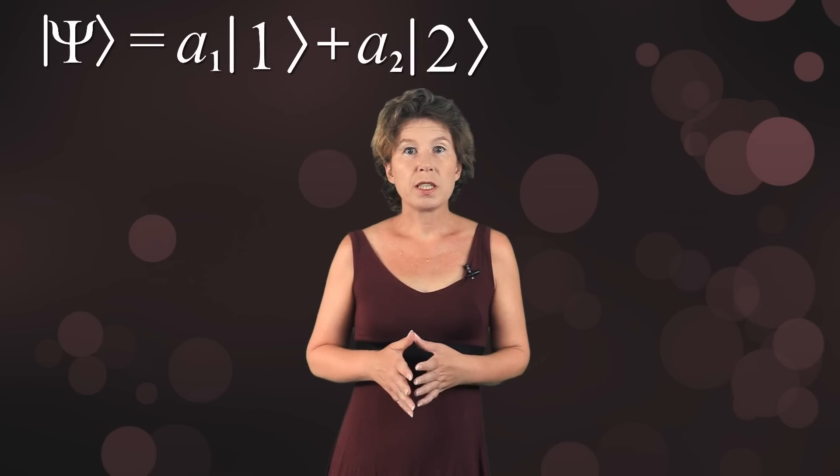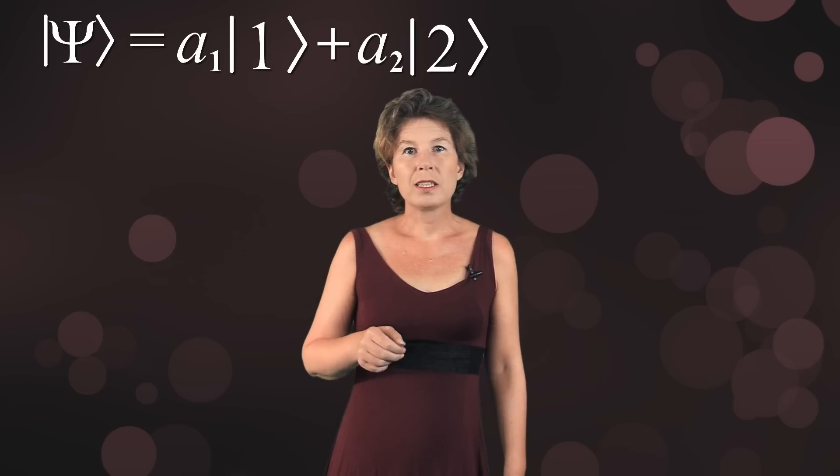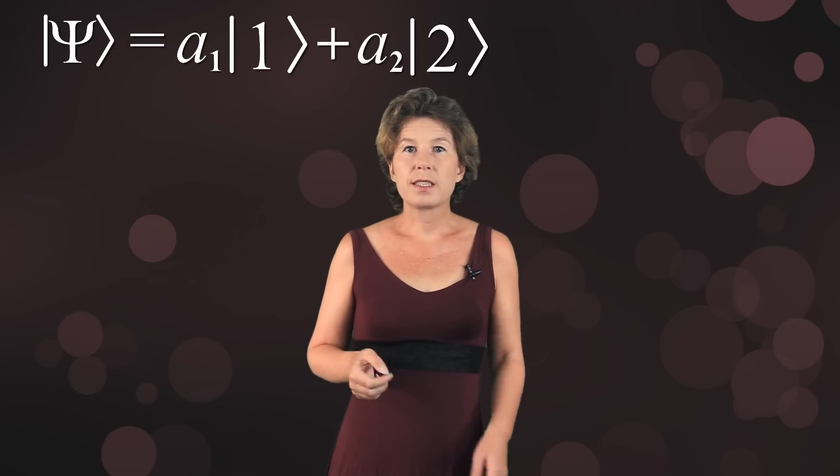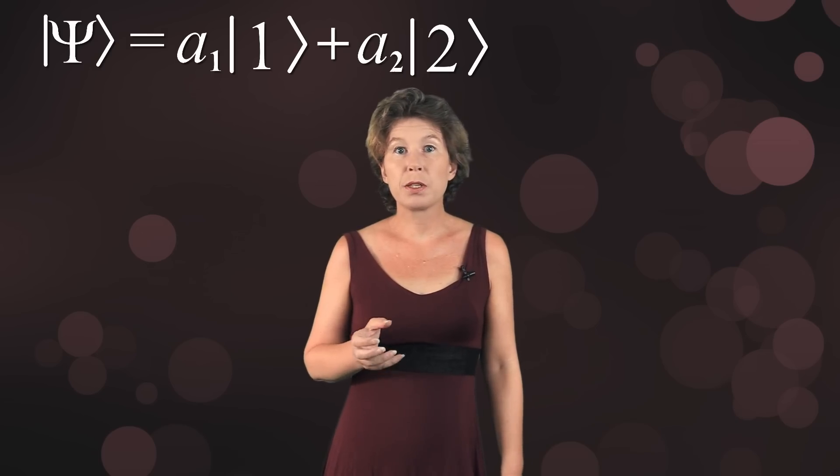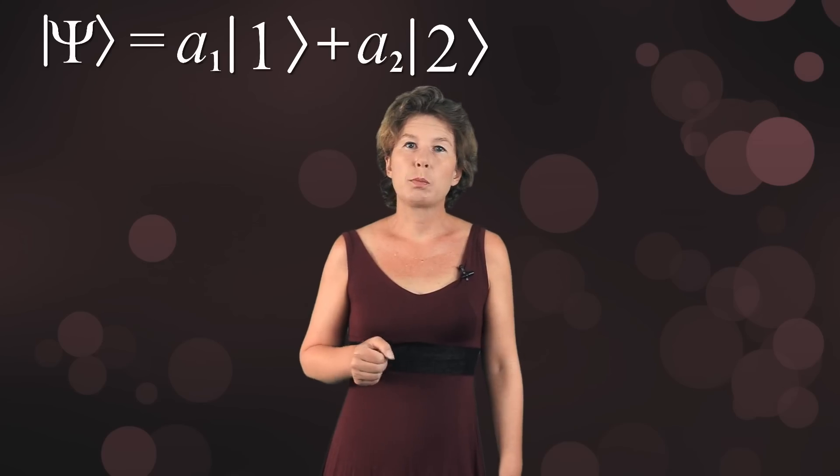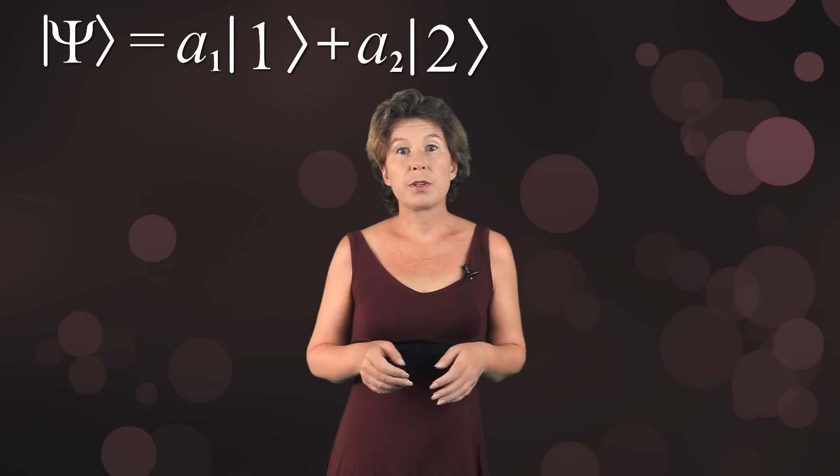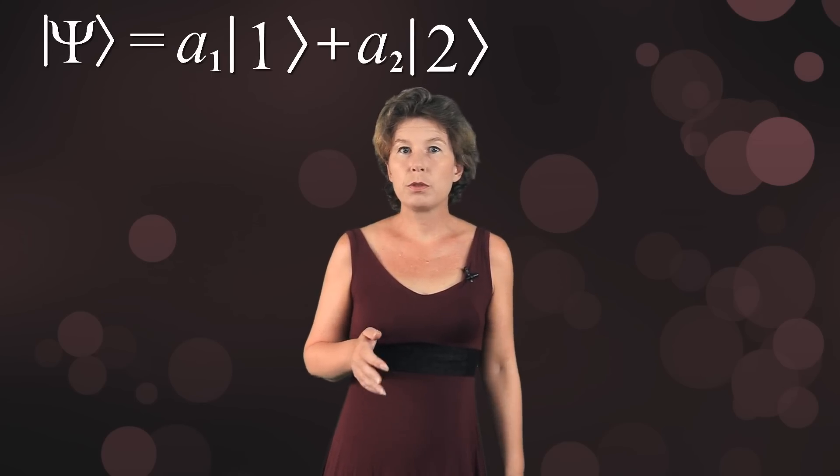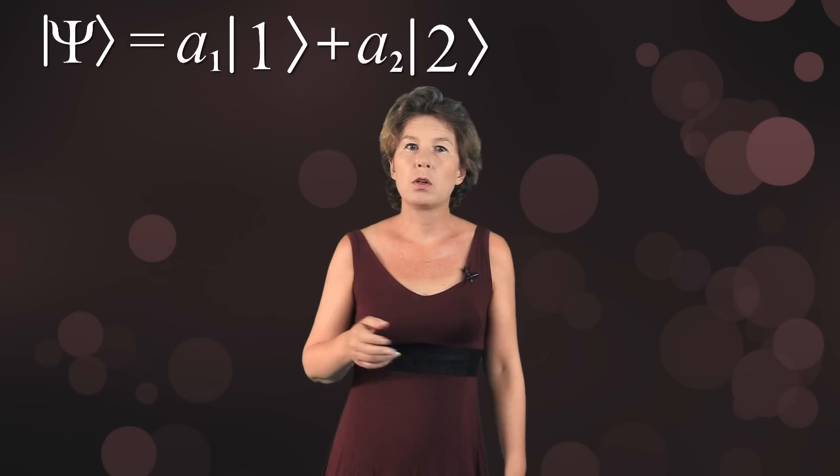It is common to use basis vectors which describe possible measurement outcomes, and we will do the same. So, one and two stand for two values of an observable that you could measure. The example that physicists typically have in mind for this are two different spin values of a particle, say plus one and minus one. But the basis vectors could also describe something else that you measure, for example two different energy levels of an atom or two different sides of a detector, or what have you.